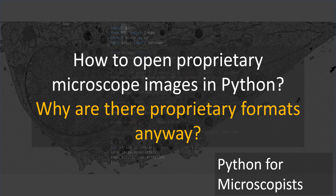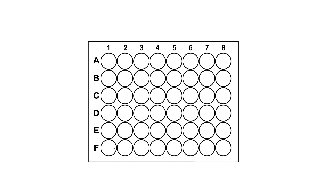If you come from an electron microscope background you probably don't deal with proprietary formats that much, because most vendors use TIFF or you can export in any format. But light microscopy is a bit more complicated. For example, if you have a multi-well plate — typically 96 wells — each well can be filled with some biological material that needs to be imaged.